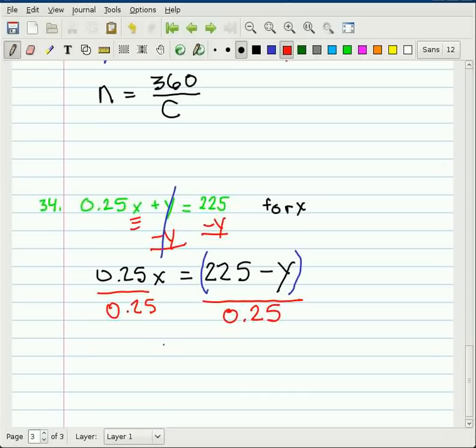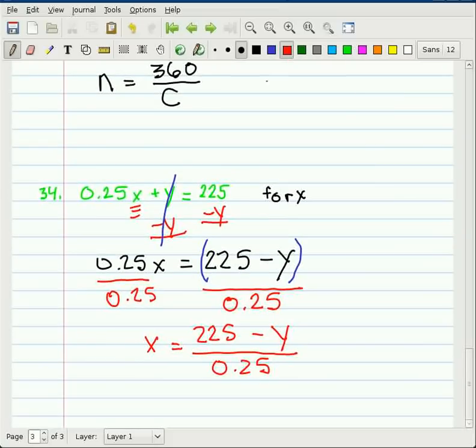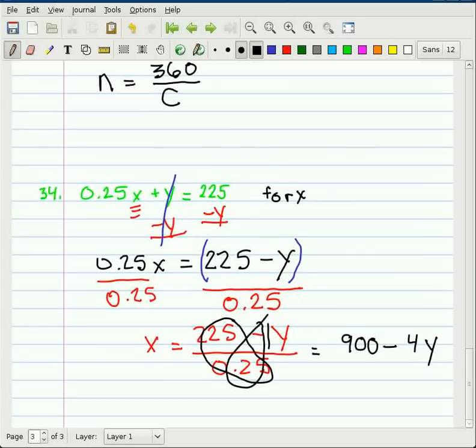And so many of you may write the answer like this. Unfortunately, it's not really proper to leave decimals in a fraction. So what we're allowed to do is divide 225 by 0.25 and y by 0.25 and write those terms separately. 225 divided by 0.25 is 900, and y divided by 0.25 is 4y. So the solution is x equals 900 minus 4y.